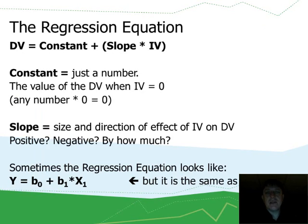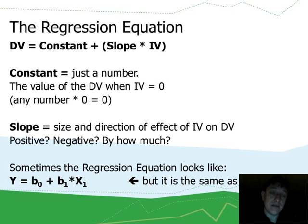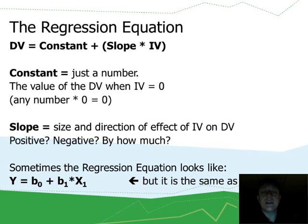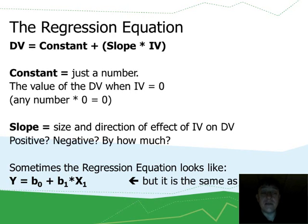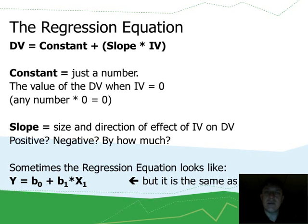Sometimes the regression equation looks a little different — it just has different notation. Instead of 'dv' for dependent variable, we write y. Instead of 'constant,' sometimes b-sub-zero is written. And instead of 'slope times an independent variable,' the slope is given the notation b1 and the independent variable is given the notation x1 for the first independent variable, with the first slope associated with it. It looks slightly different, but it is the same idea with different notation.